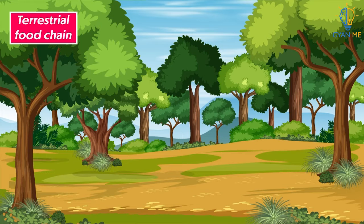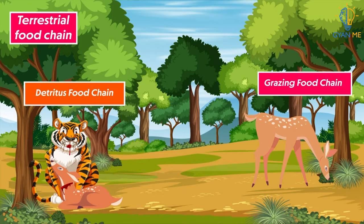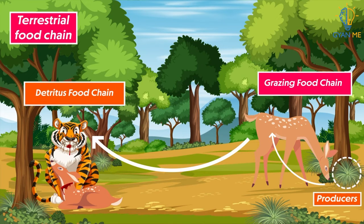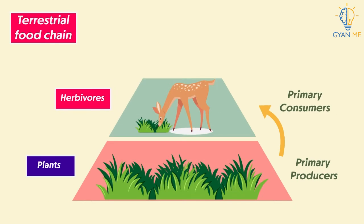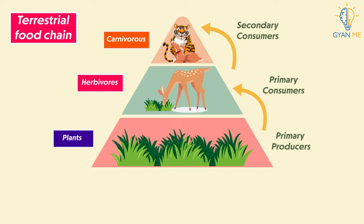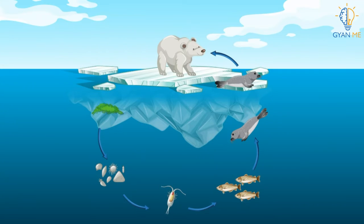There are various types of terrestrial food chains, like the grazing food chain, detritus food chain, etc. All these food chains start with producers, i.e. green plants, passing through herbivores and then to carnivores. All organisms depend on the producers, i.e. plants, for energy generation or food production. This food then passes on to herbivores and then to carnivores in turn. Autotrophs form the base of all ecosystems on earth, and the majority of ecosystems follow this kind of food chain.